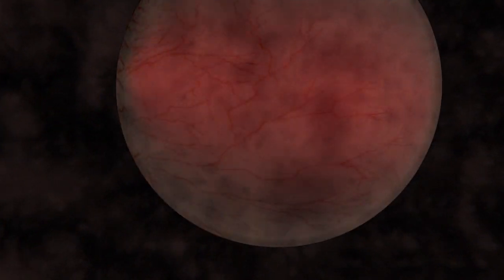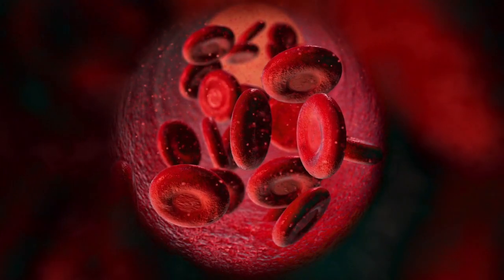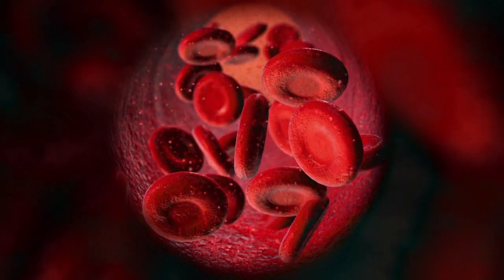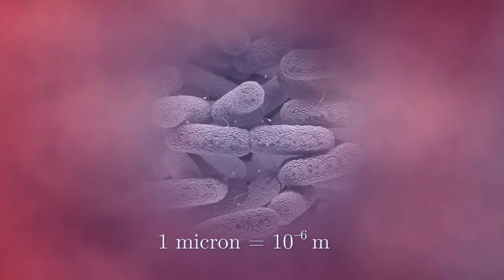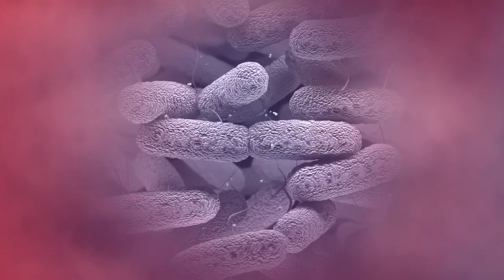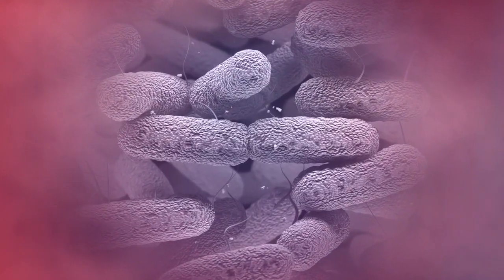At 10 to the minus 4 meters, we can see the blood vessels in my retina. And by the time we hit 10 to the minus 5, we're seeing individual blood cells. Now we're at 10 to the minus 6 meters. A millionth of a meter. That's a unit that comes up often enough, we give it a special name: a micron. Here we can see individual bacteria. Each one is a few microns across.